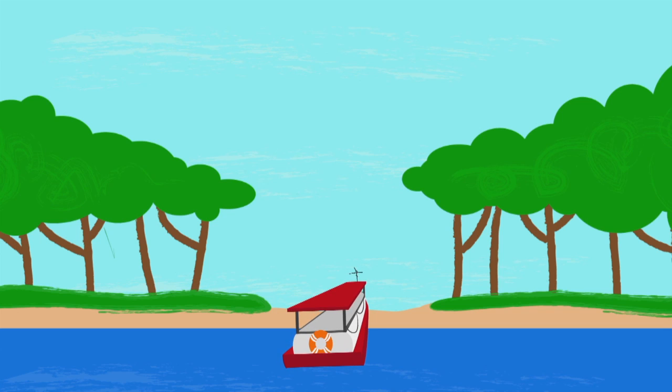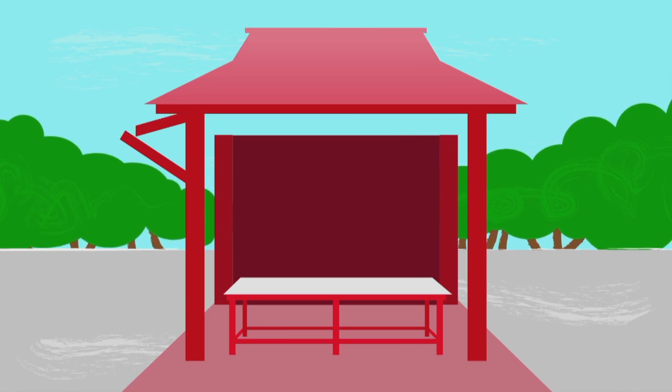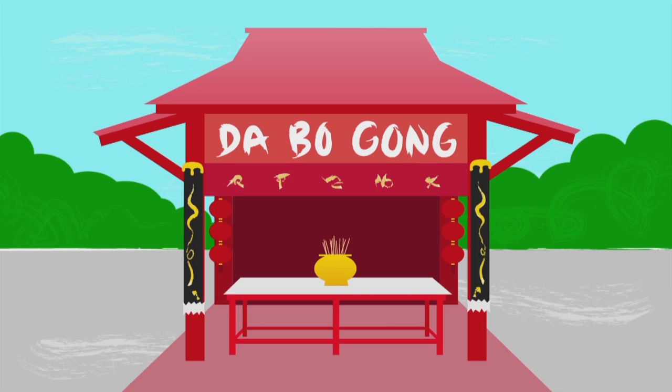A famous Tuapekong Temple is located near Ubin's jetty. Devotees make regular trips to the temple to pray for good luck, health and wealth.